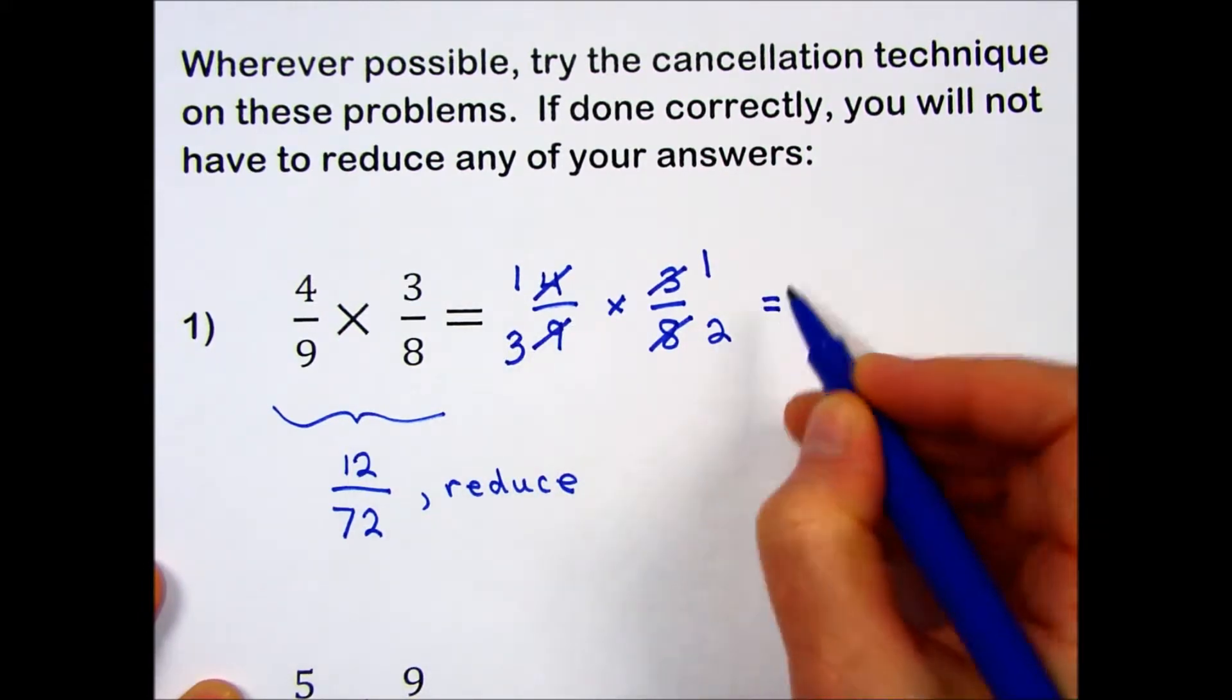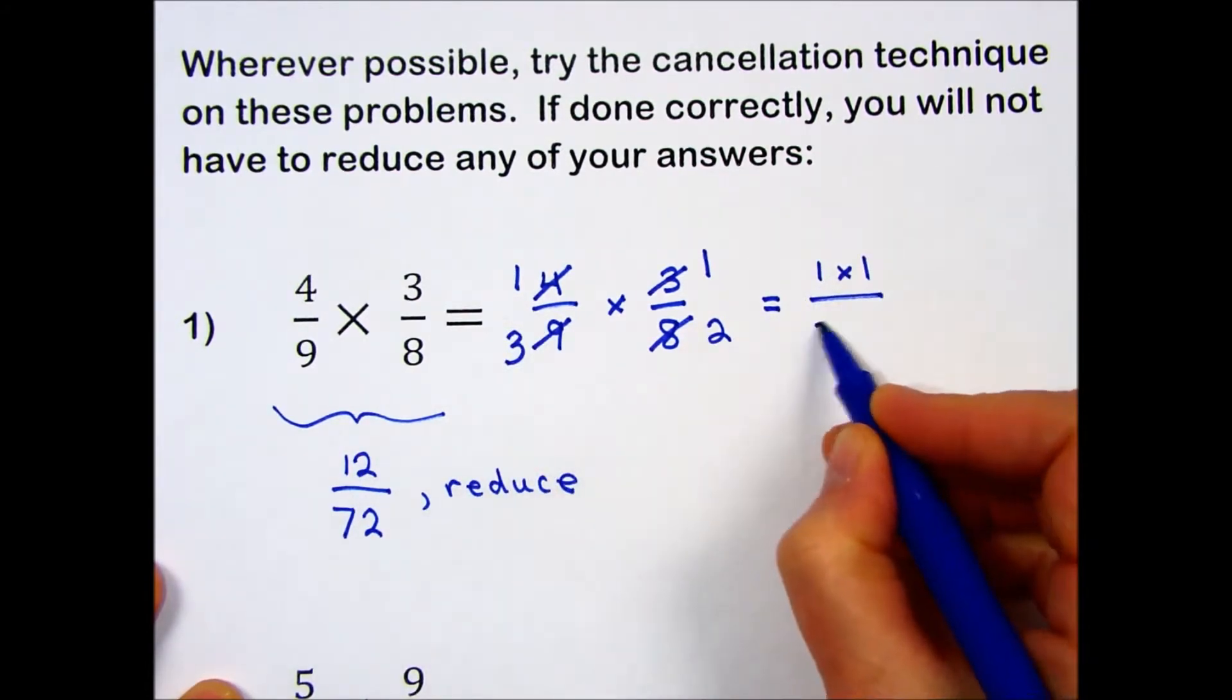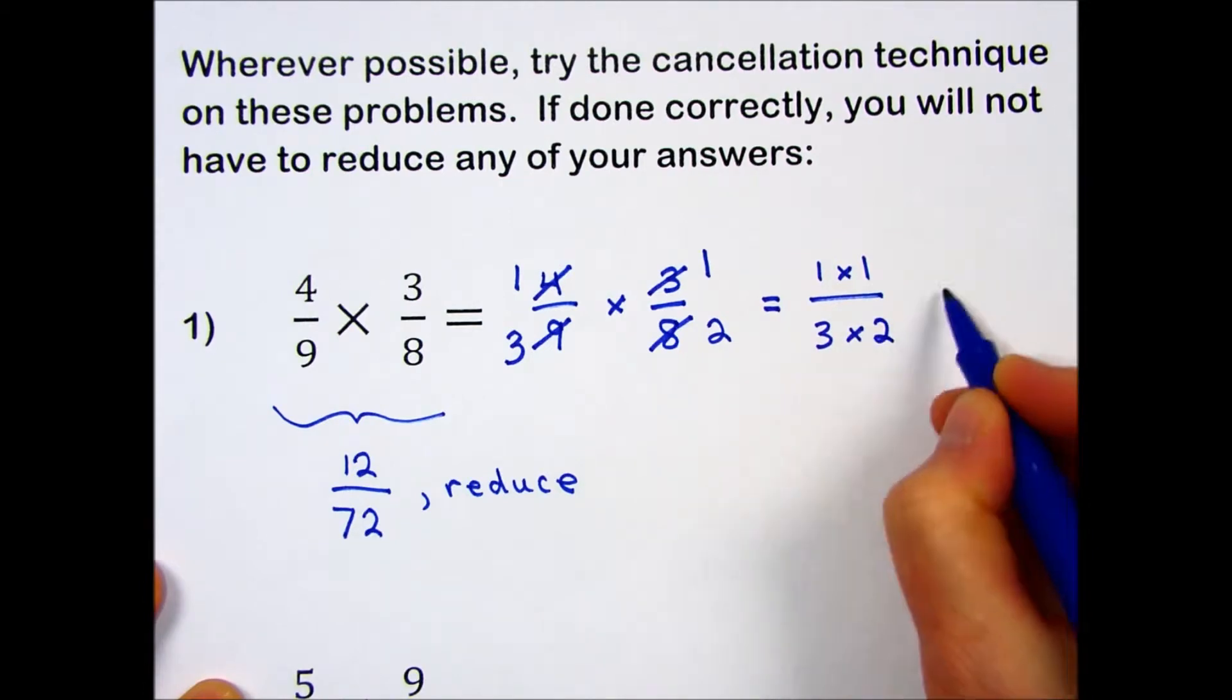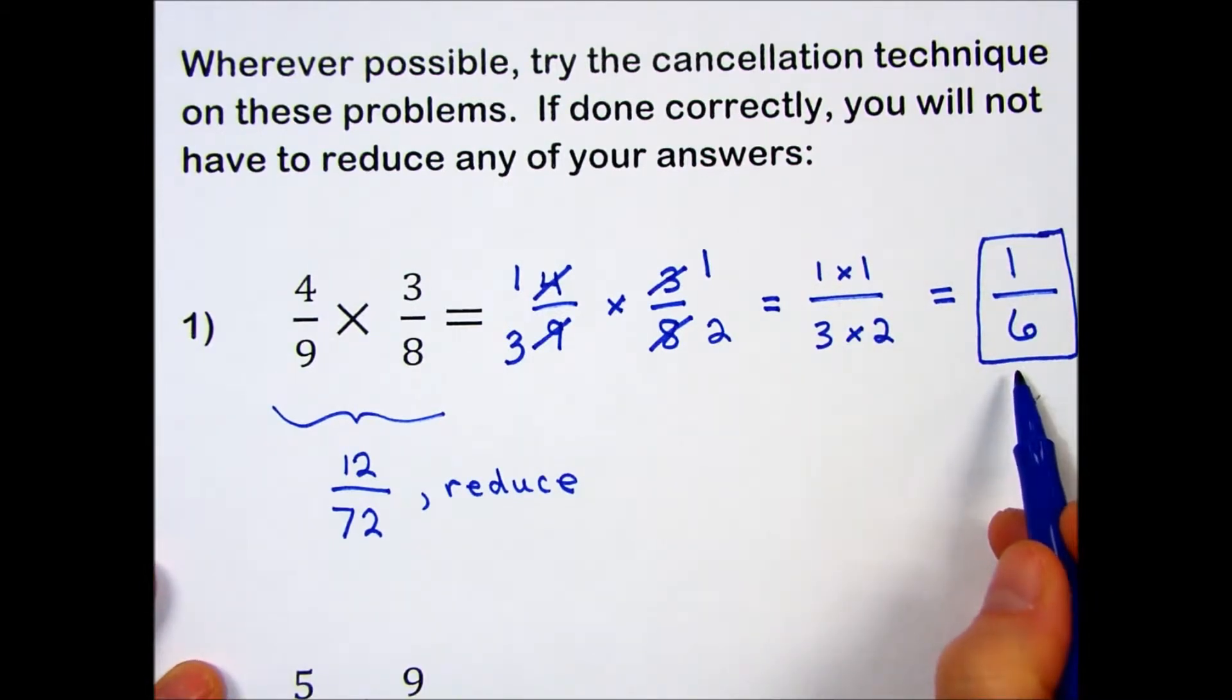Then I finish up top times top, bottom times bottom. And my answer is 1 sixth. And this does not need to be reduced.